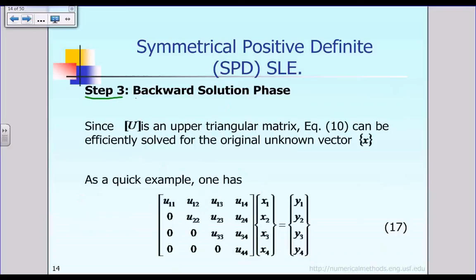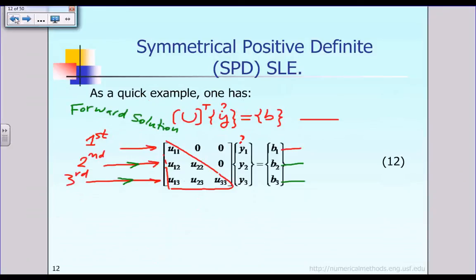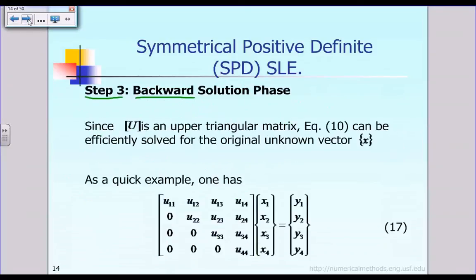Now let's move on to step number 3, which is the last step. We call this the backward solution phase. Going back to a previous statement: U times x equals y, as indicated in equation 10. So now we are looking at the equation U x equals y in its full form.